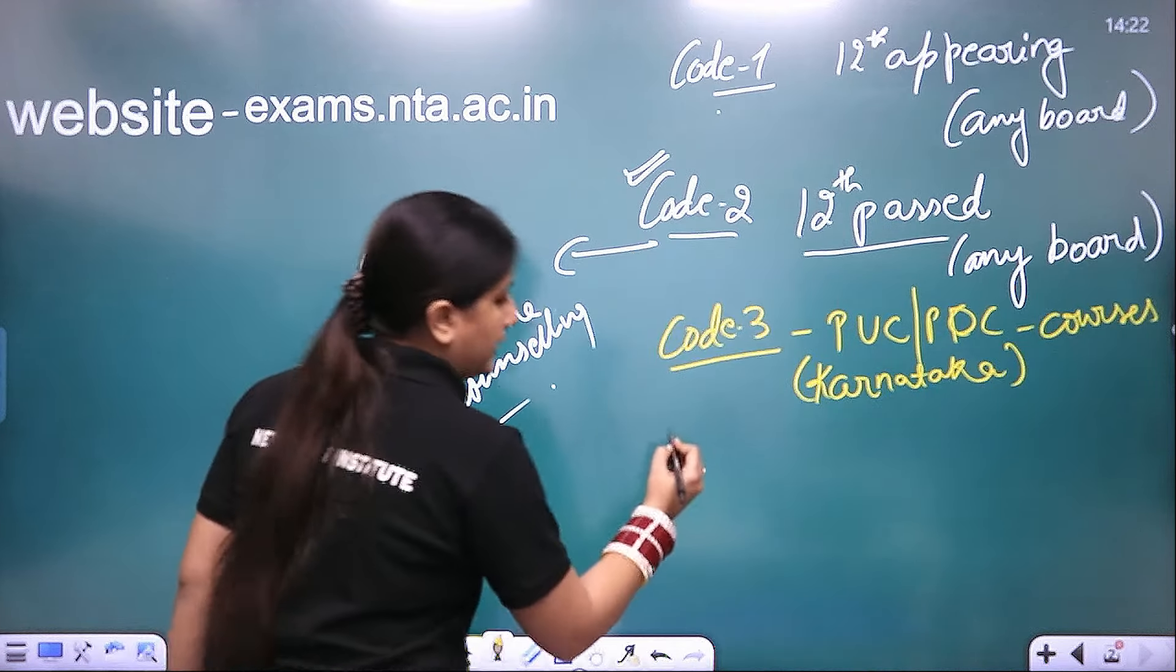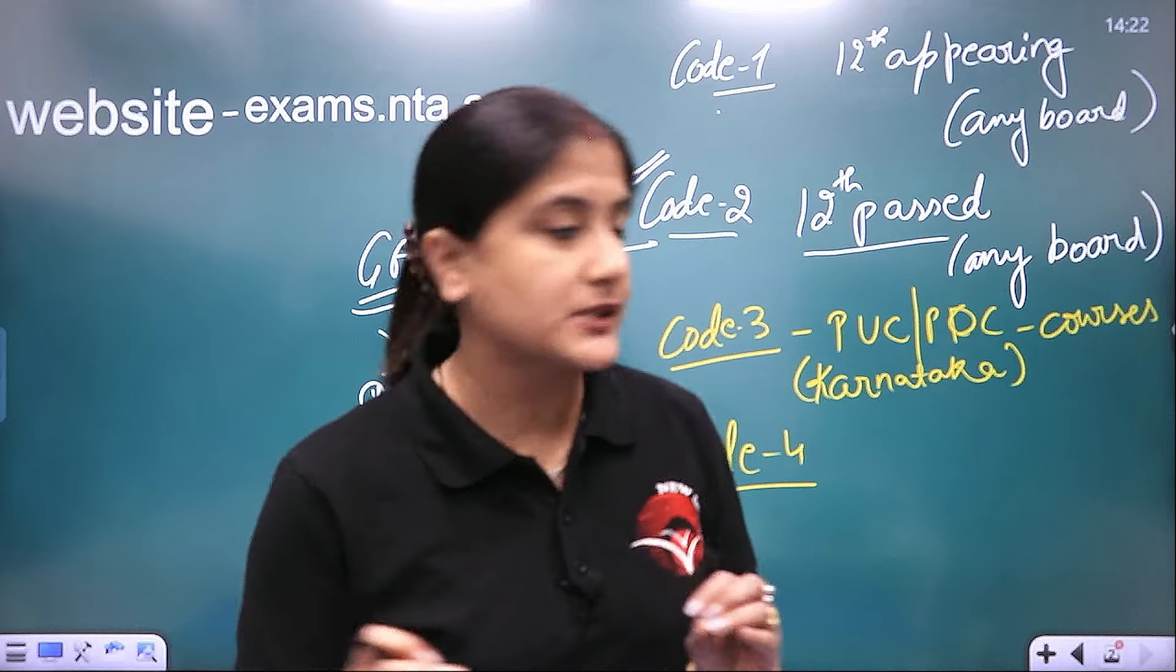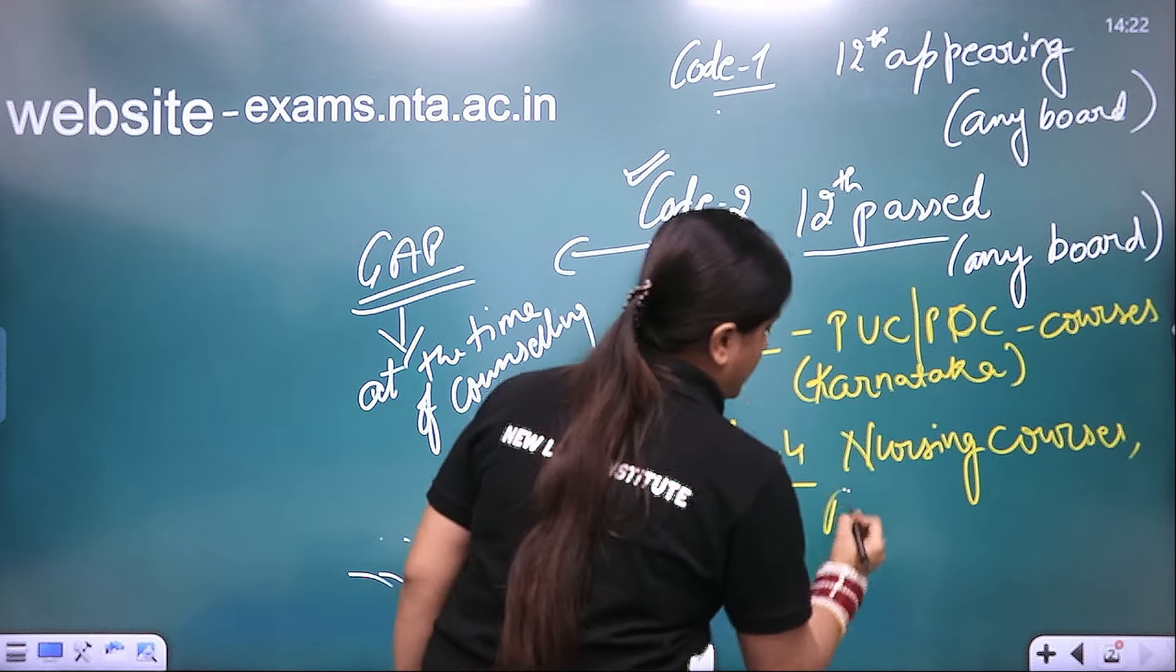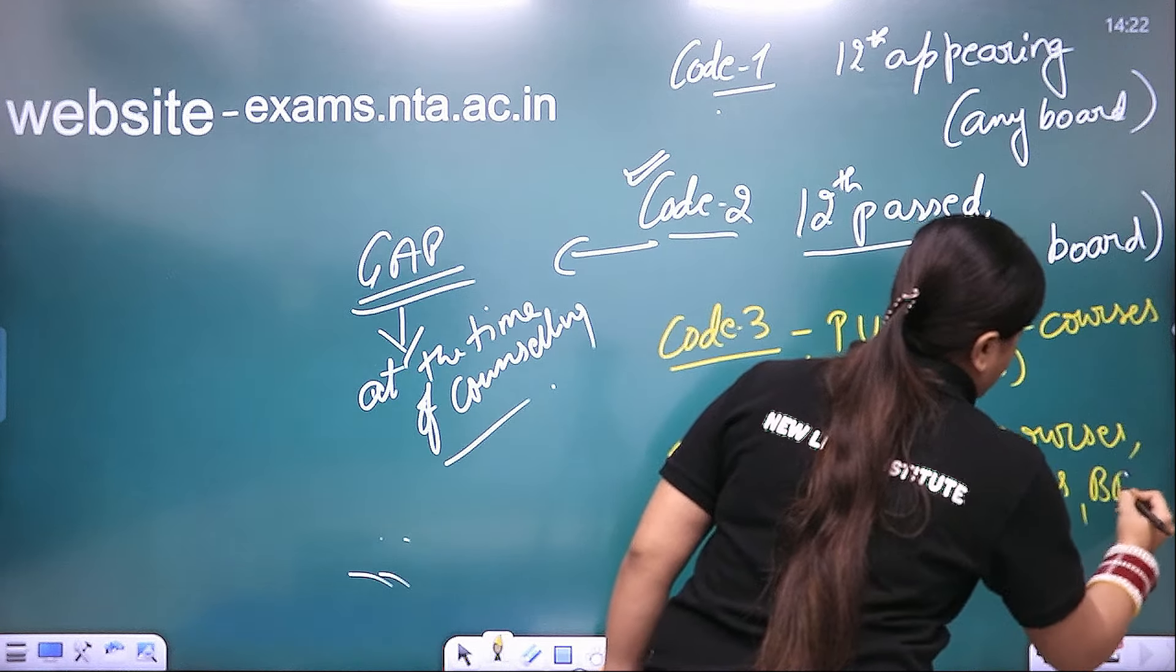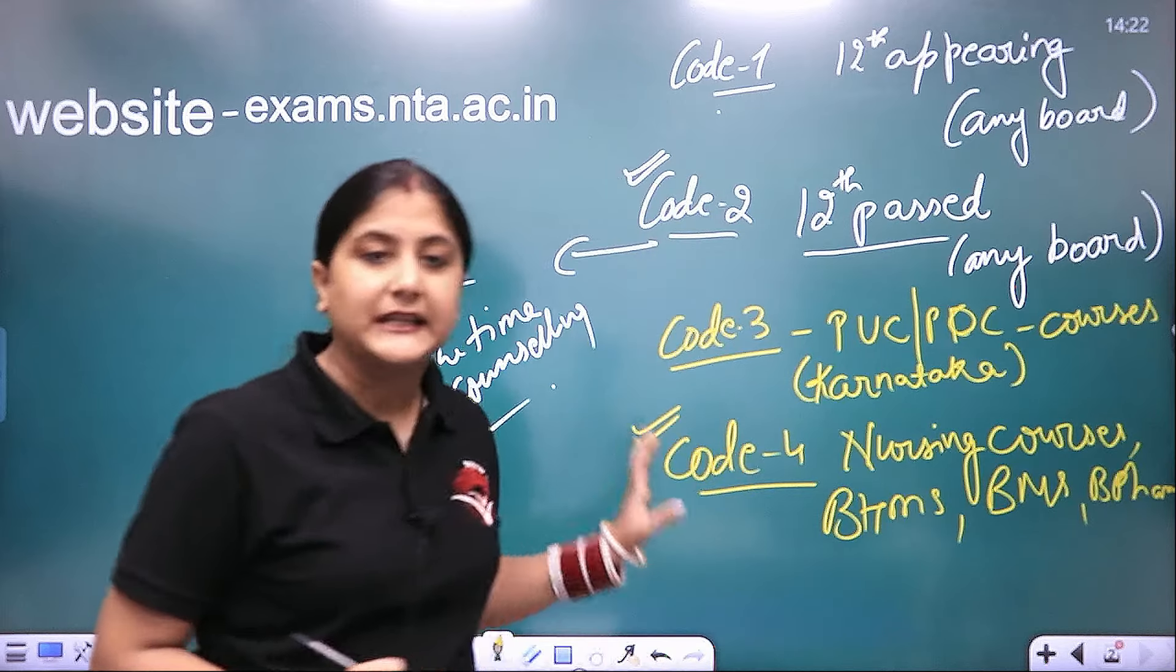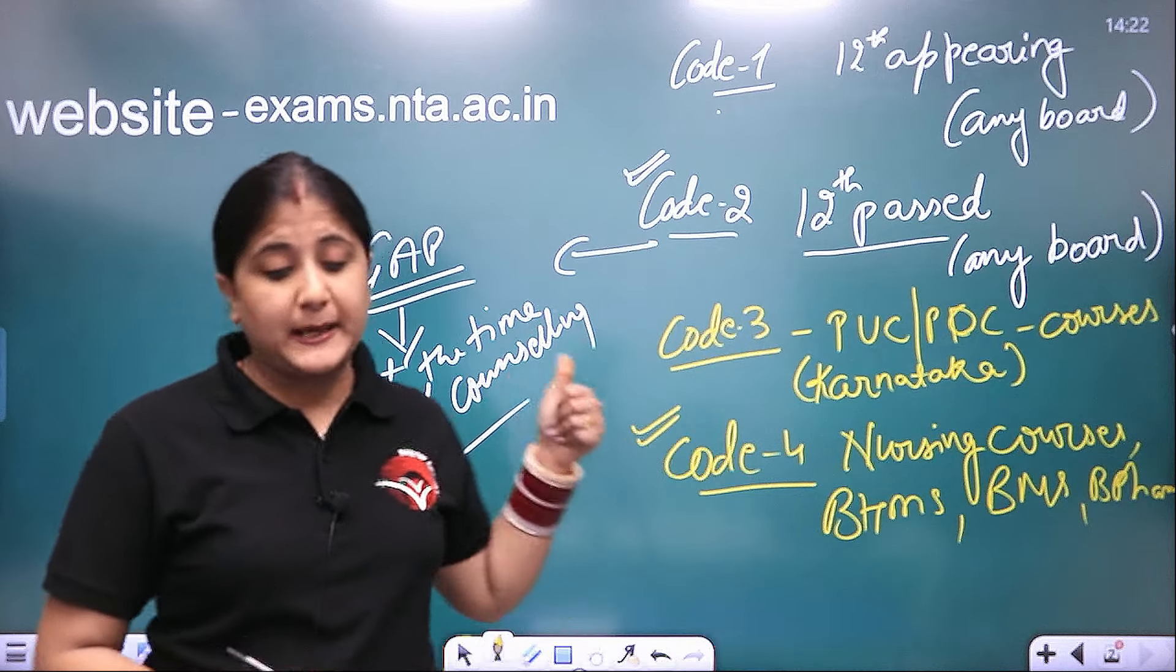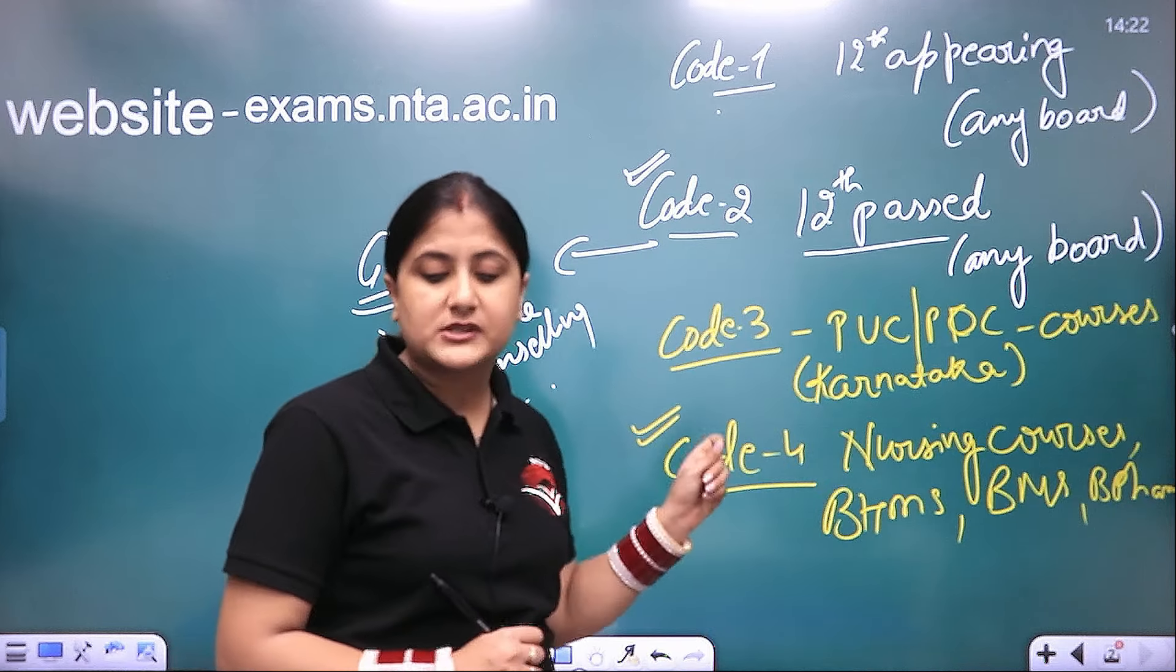Now let's talk about code 4. If you have done nursing courses, if you have completed your nursing courses, or if you have completed your BAMS, BHMS, B Pharma, then you will use code 4. If you have completed any of these courses, then you will use code 4. I have not done BSC. For BSC we have different codes which I will tell you in the next step. So we will use code 4. BAMS, BHMS, B Pharma. Whether you are pursuing or you have completed, this code you will use code 4.